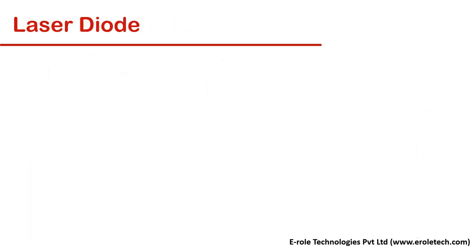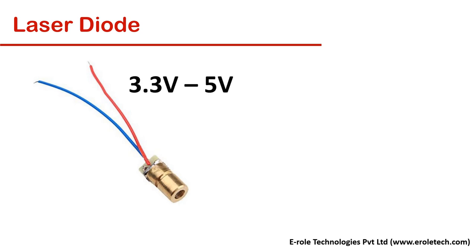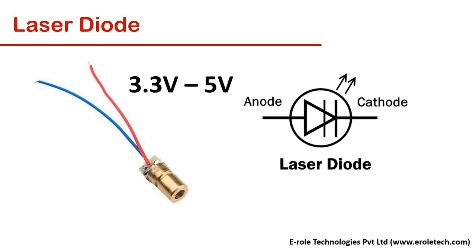Same like LED, laser is also a diode which emits light, but it focuses all its light in one direction. Laser diode turns on at 3.3 volt. This is the symbol of laser diode.